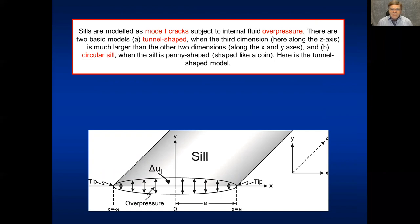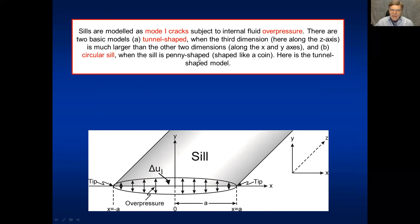Sills are modeled as mode-one cracks with internal fluid overpressure. There are two basic geometric models: the tunnel-shaped model, where the third dimension in the z-axis direction is much larger — strictly speaking infinite, but in reality many times larger than the x or y dimensions — and the circular or penny-shaped sill, also called a coin-shaped sill.